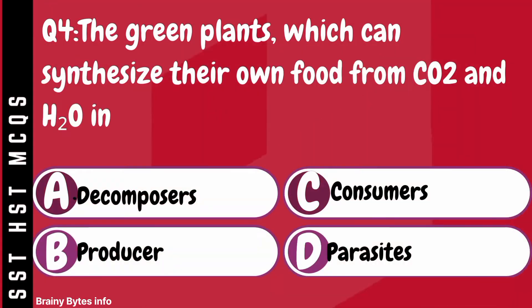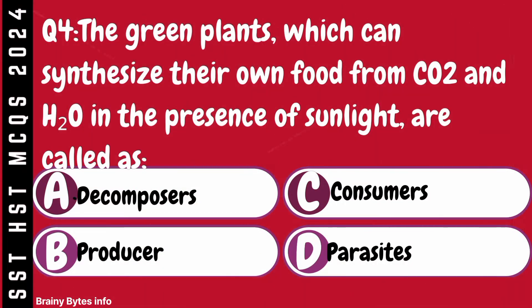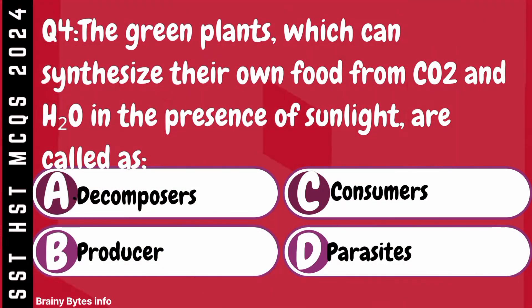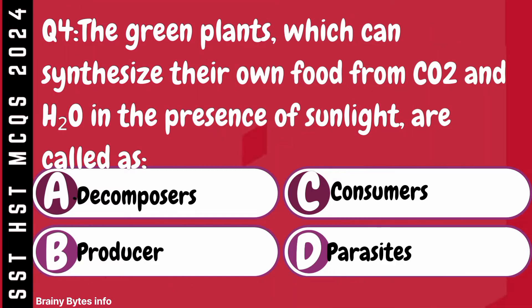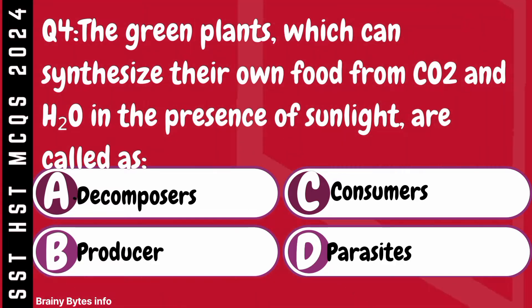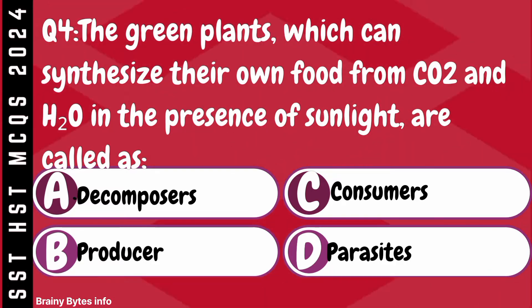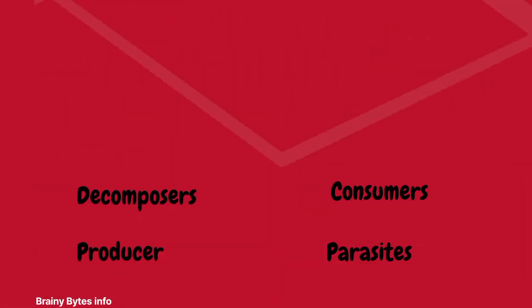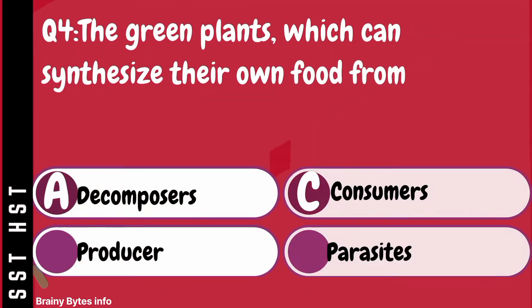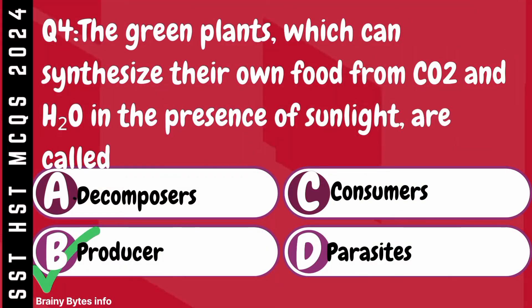Question 4. The green plants, which can synthesize their own food from CO2 and H2O in the presence of sunlight, are called. A. Decomposers. B. Producers. C. Consumers. D. Parasites.